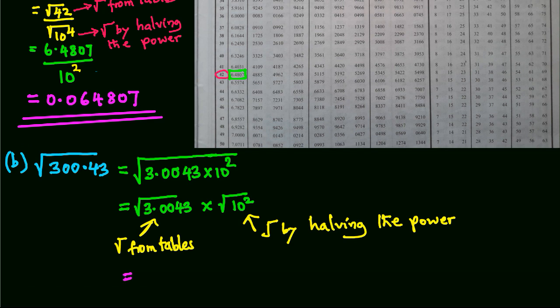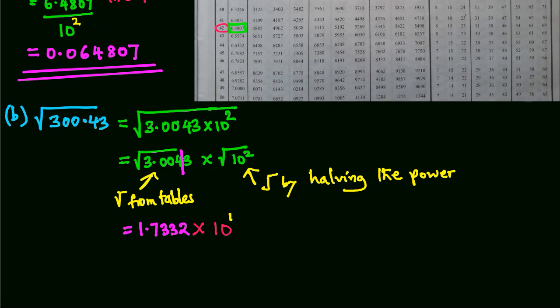From tables, square root of 3.0043—and remember, because we are working with four-figure tables, we can only read up to four figures—so 3.004 is 1.7332, times 10 power 1. This gives us the answer as 17.332.